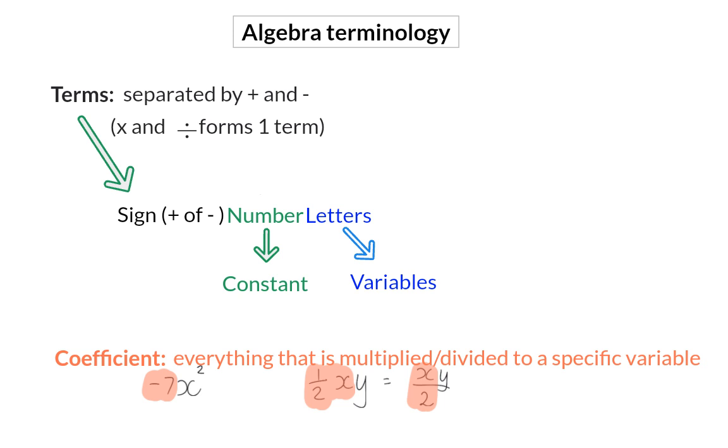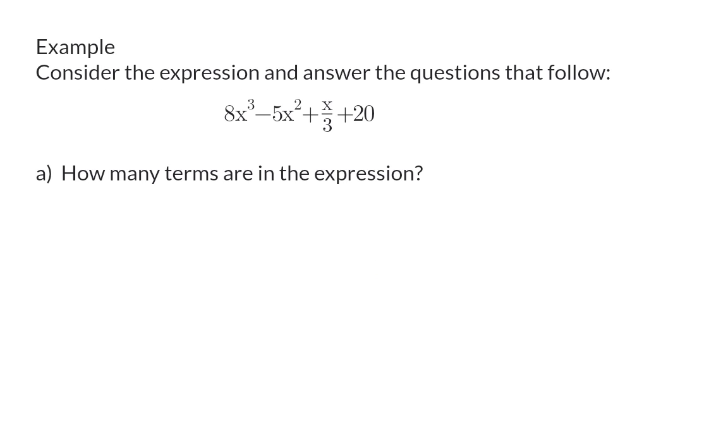Let's have a look at an example of how all this theory can be asked in the question. Consider the expression, and answer the questions that follow. Question A. How many terms are in the expression? We already know that pluses and minuses separate terms. So, here we start off with the first term, and then the minus separates the second term from the first one. Then we have a plus separating the third term, and another plus separating the fourth term. So, here we have four terms in the expression.